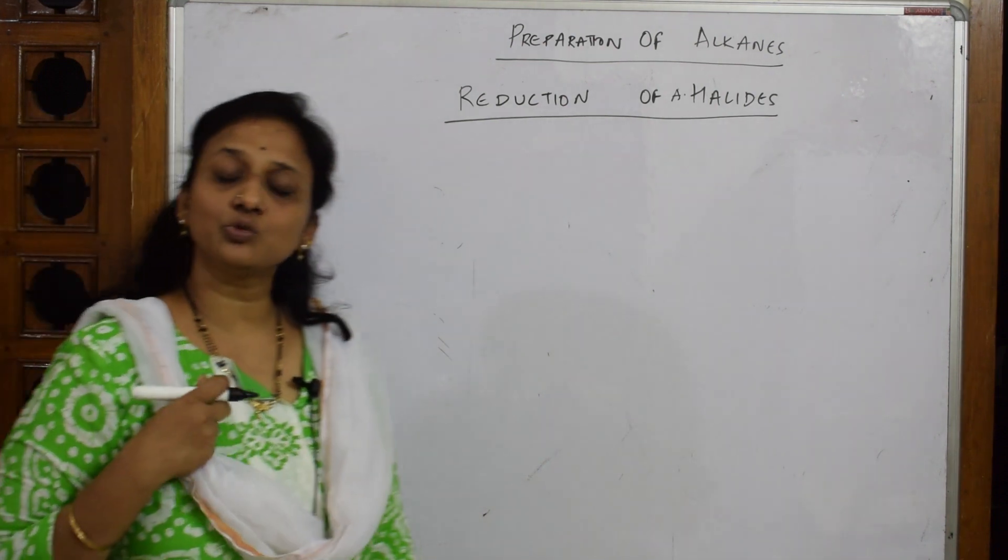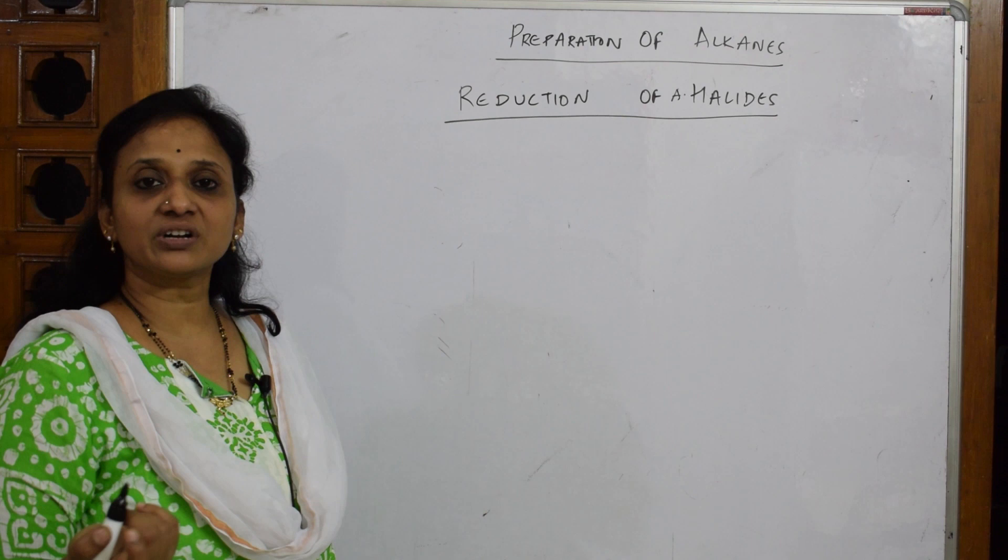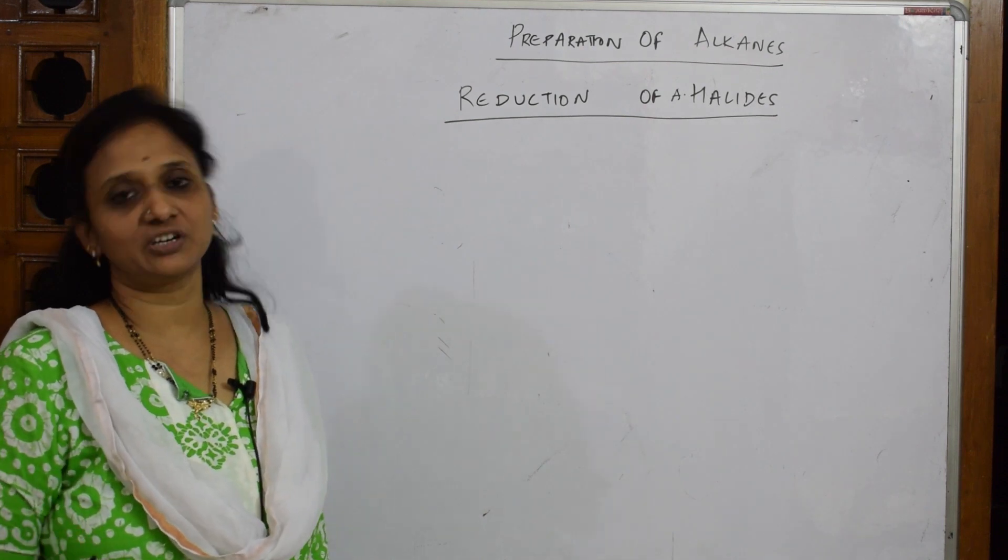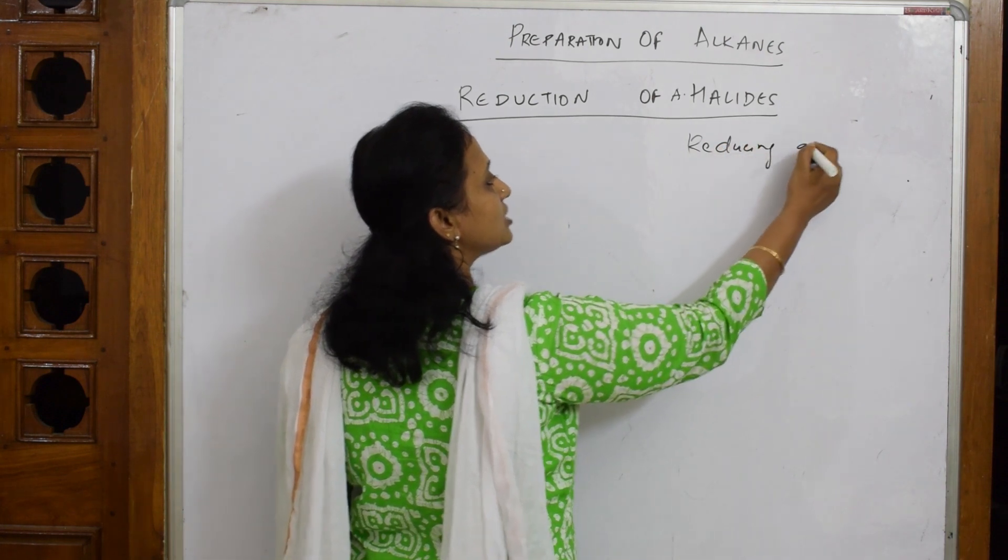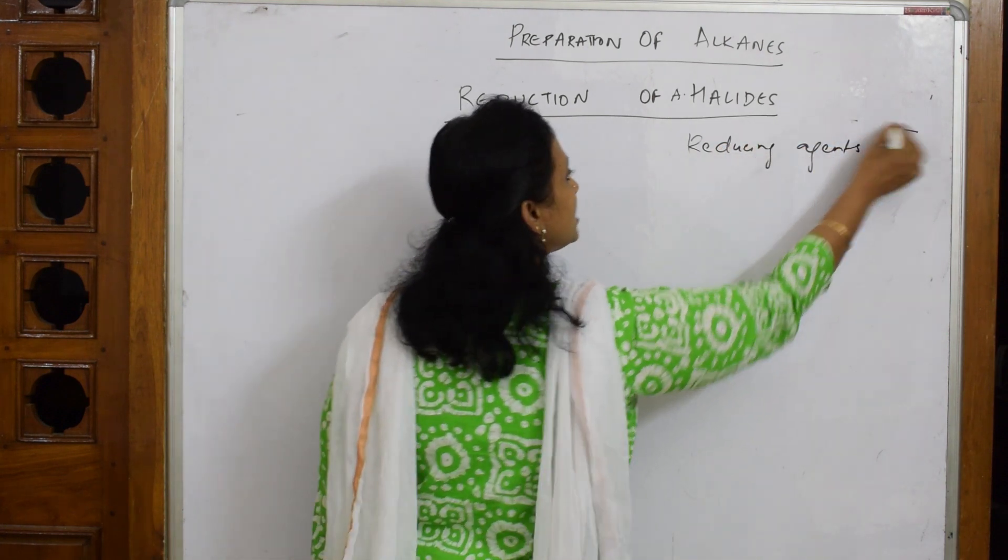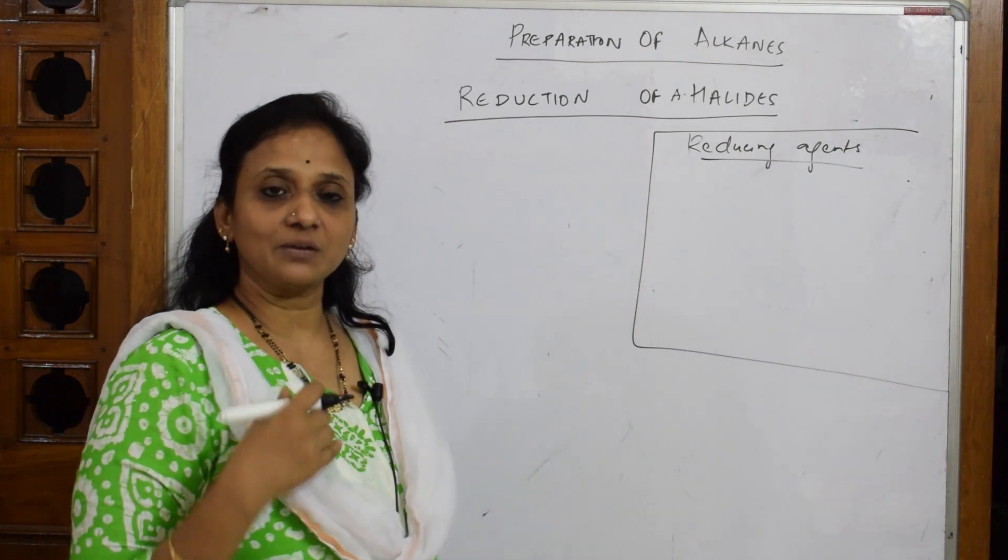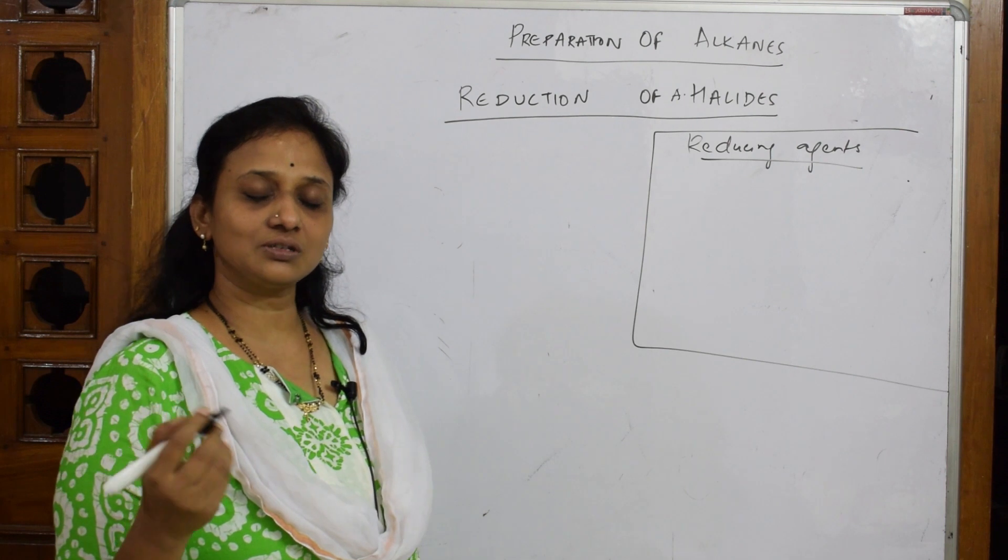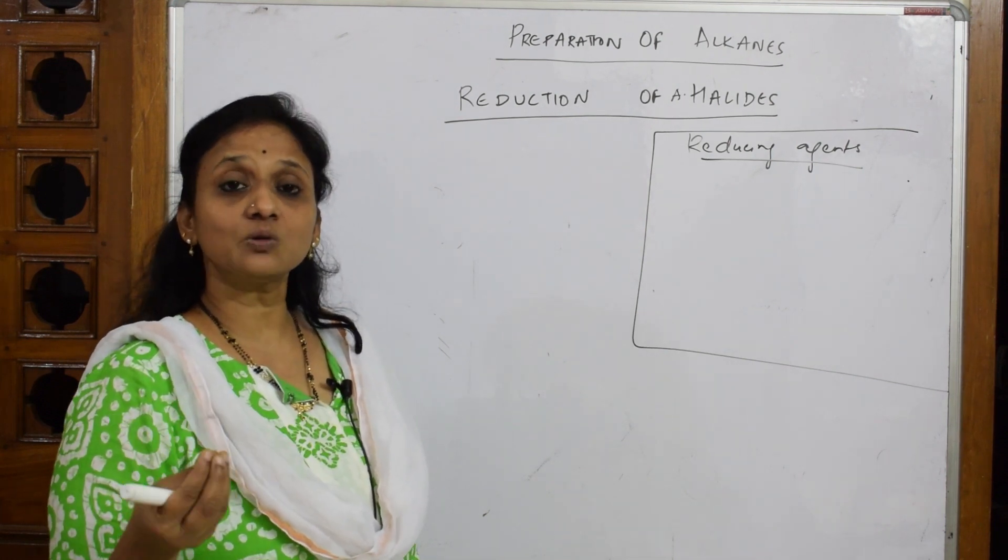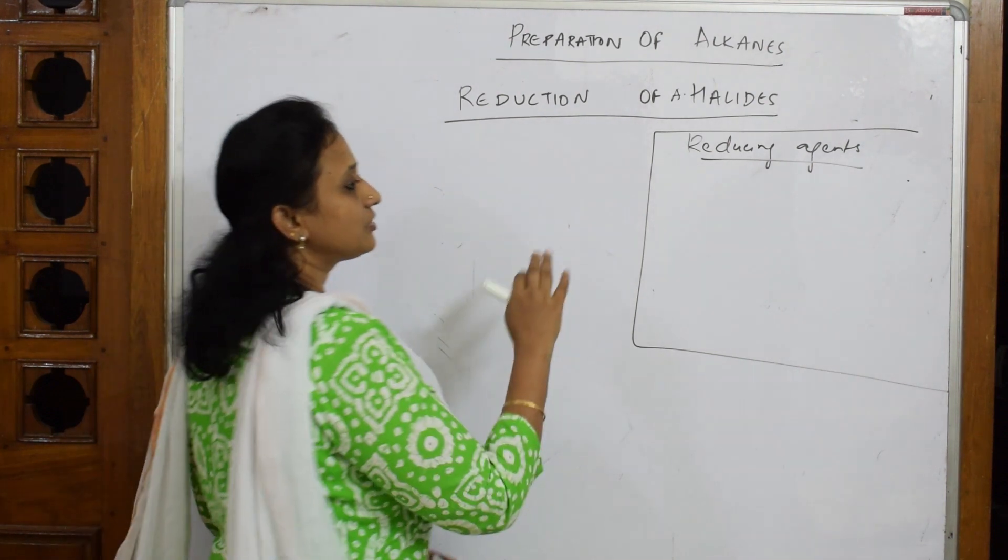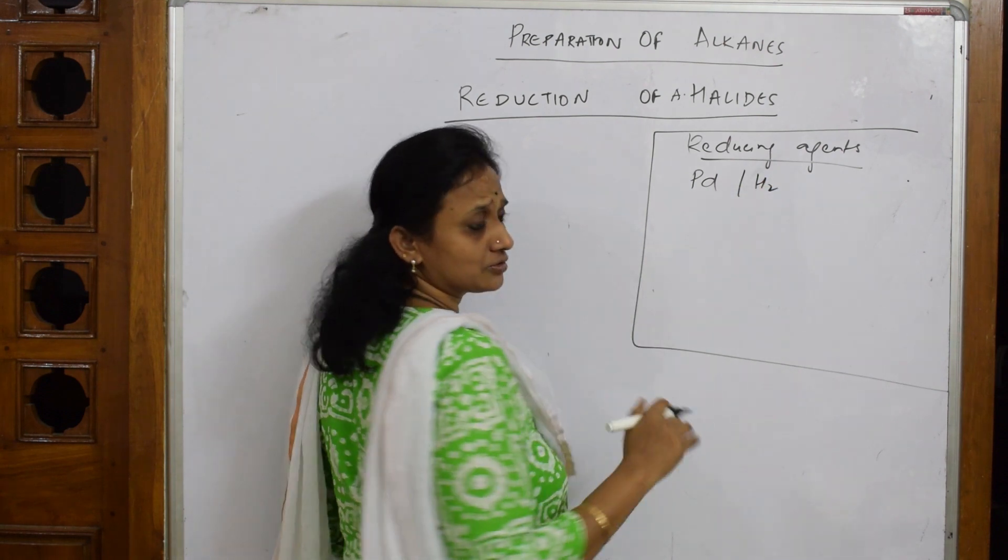First of all, whenever you are going to study about a reduction reaction, you require reducing agents. Without reducing agents you can't perform the reduction process. What are the different reducing agents which you should remember? Why are we writing these reducing agents? In the exam, whenever you see these reducing agents on top of the arrow, that means your teacher wants you to prepare or take out hydrogen from the given reactant.